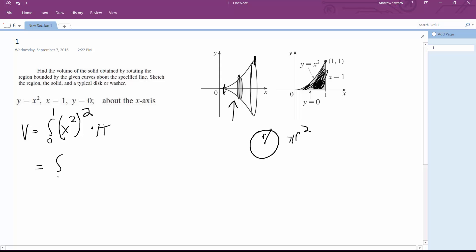So this ends up being the integral from zero to one of x to the fourth times pi dx. So pulling out our constants and integrating it, we get pi one-fifth x to the fifth from zero to one.